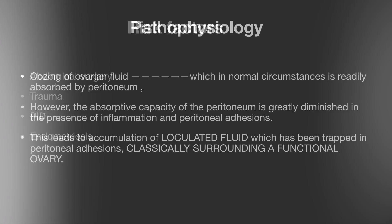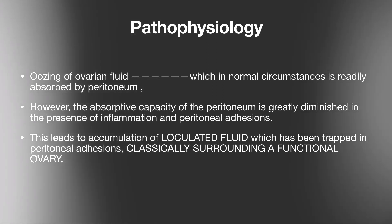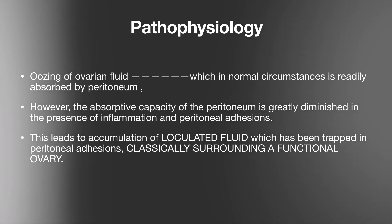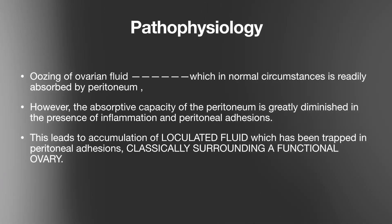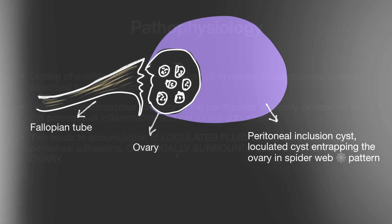What is the pathophysiology behind the formation of peritoneal inclusion cysts? There is oozing of ovarian fluid from a normal functioning ovary, which under normal circumstances is absorbed by the peritoneum. However, the absorptive capacity of the peritoneum is greatly diminished in the presence of inflammation and peritoneal adhesions, leading to accumulation of loculated fluid trapped within the peritoneal adhesions, classically surrounding a functional ovary.